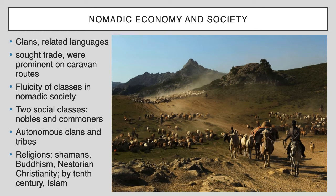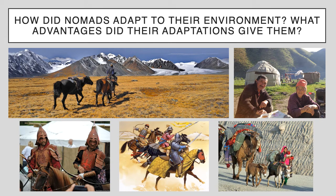By the 10th century, Islam became very prominent because a lot of the nomadic people lived on the borderlands of the Abbasid Caliphate. Another question to think about is how did nomads adapt to their environment, and what advantages did their adaptations give them? People often overlook nomadic societies and think they are not as advanced or sophisticated as settled civilizations — and that's incorrect. The fact that they adapted to this lifestyle shows how humans, no matter where we go, figure out a way to live within our environment — this is the SPICE theme of human-environment interaction.